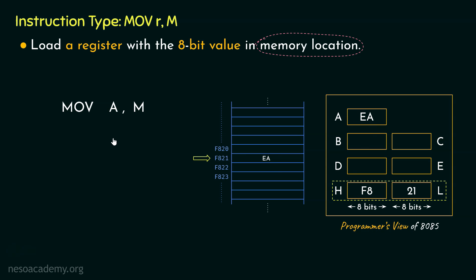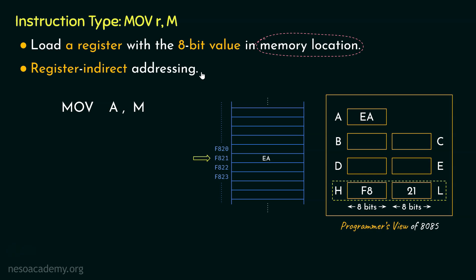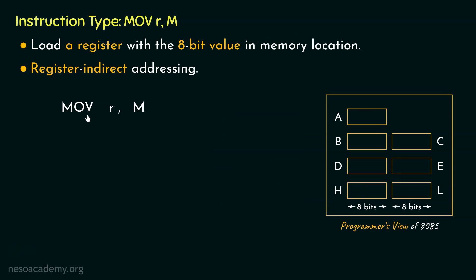Now did you notice something very interesting? We used the instruction MOV A,M, but in this entire instruction did we ever use anything that would indicate the HL pair? Well, we didn't. And this is called register indirect addressing. Using the alphabet M within a particular instruction specifies the indirect reference to the HL pair. So this is how, from a particular memory location, any register can be loaded with the data within it using the instruction MOV R,M. This entire instruction falls into the 1-byte long category.